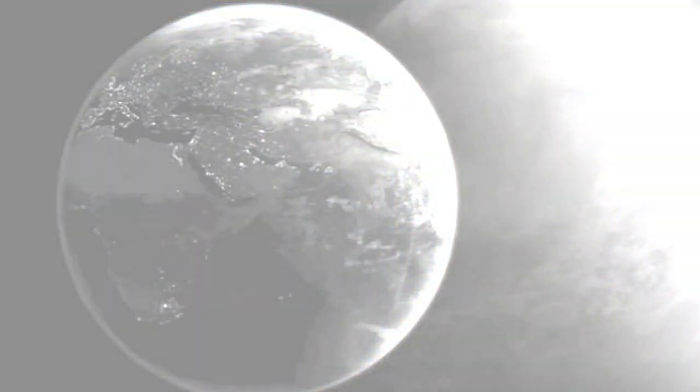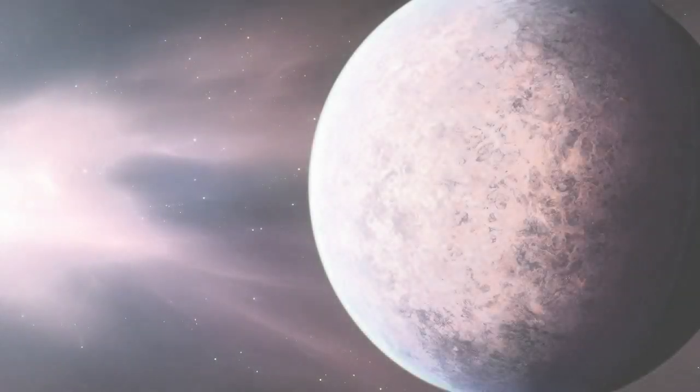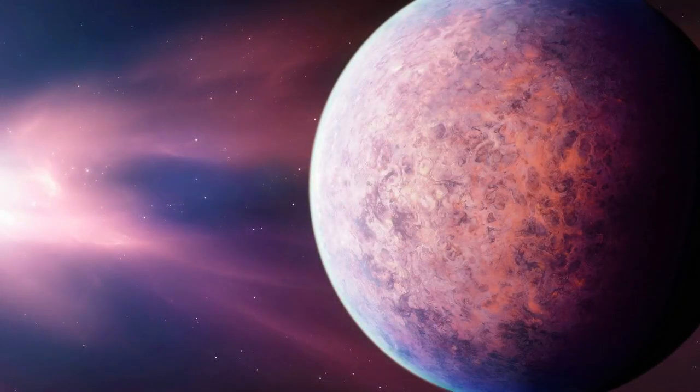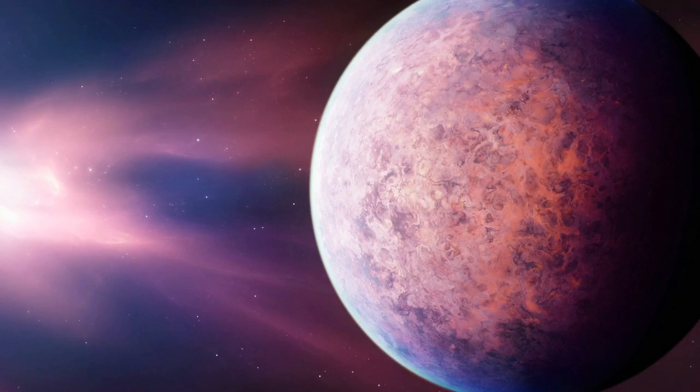The middle planet, Wolf 1061c, sits within the Goldilocks zone where it might be possible for liquid water, and maybe even life, to exist. It is fascinating to look out at the vastness of space and think a star so very close to us, a near neighbor, could host a habitable planet.